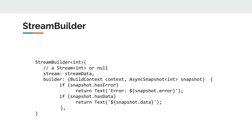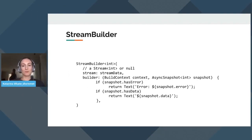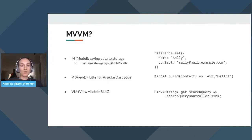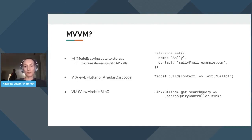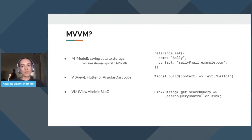Now let's look directly at the BLoC implementation and how to put all these terms together. BLoC is a view model in an MVVM application. MVVM is a software architecture pattern standing for Model-View-ViewModel. The Model saves data to storage and contains storage-specific API calls. The View is the UI — Flutter or, when I was starting my app, Angular Dart. And the ViewModel is the BLoC.